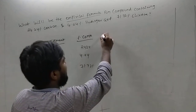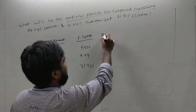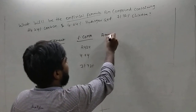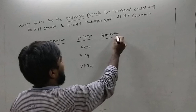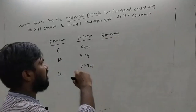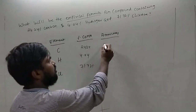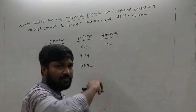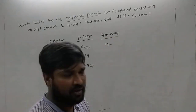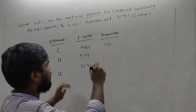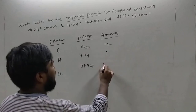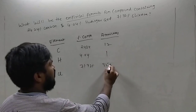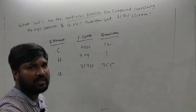The next column is atomic mass. The atomic mass of carbon is 12, the atomic mass of hydrogen is 1, and the atomic mass of chlorine is 35.5.